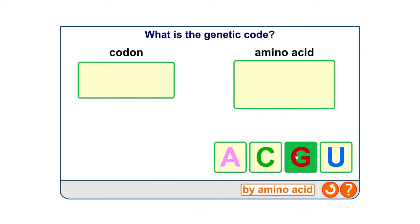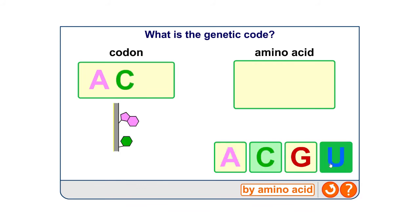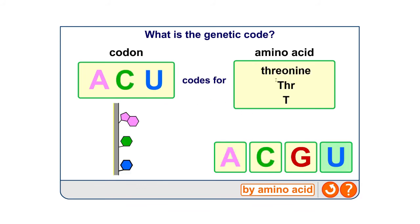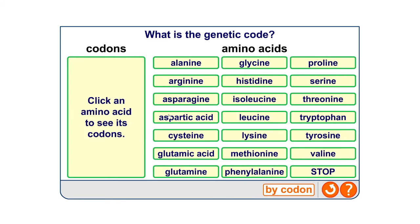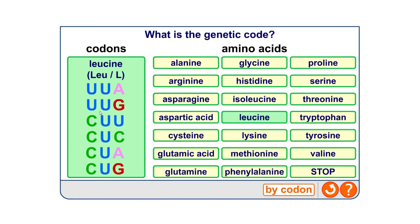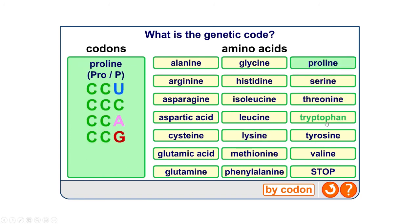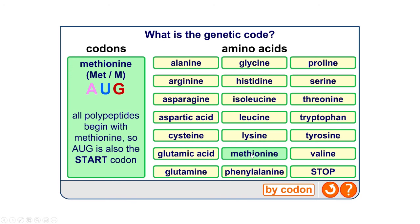If we put in a triplet code, we find that it codes for a specific amino acid. Looking at all of the amino acids, we can see all the different codons they might have. For example, leucine is coded for by six combinations: UUA, UUG, CUU, CUC, CUA, and CUG. This tells us we've reduced the 64 possibilities — some amino acids have multiple codes and some have only a single one.